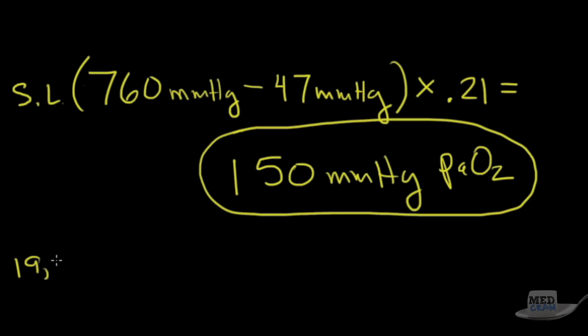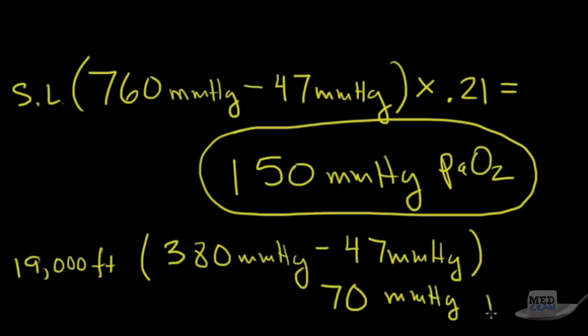Now at 19,000 feet, which is approximately just above base camp for Mount Everest, the total barometric pressure at that altitude is about 380 millimeters of mercury. We subtract the 47 millimeters of mercury from the vapor pressure, and what we come up with is about 70 millimeters of mercury of PaO2.